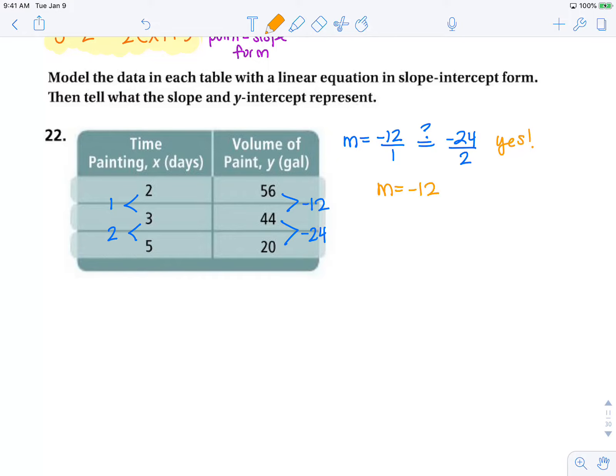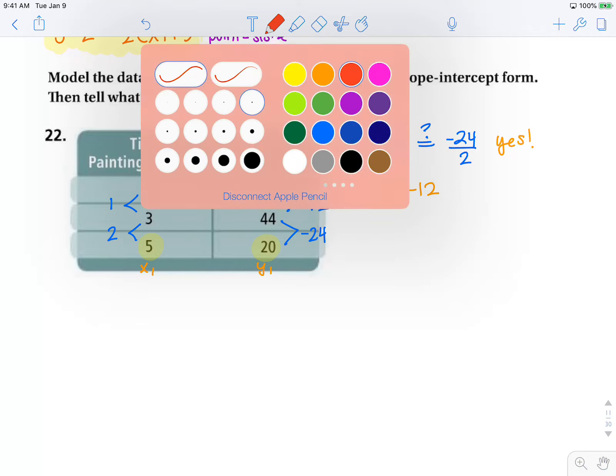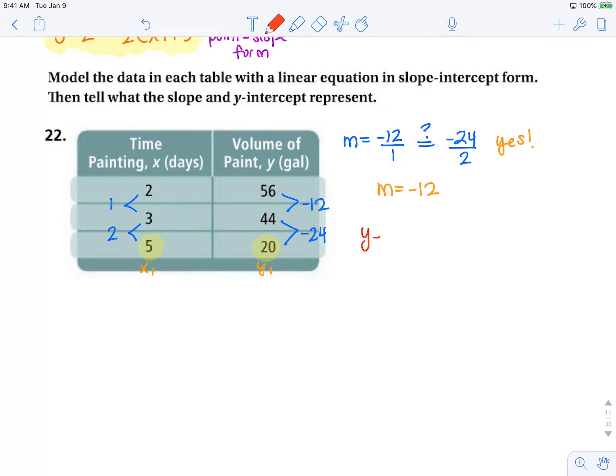Now remember, we can use point-slope form using any point on this table. So I'm going to use this point, 5 and 20, because that's going to be a nice, easy point to play around with. So this is going to be my x1 and my y1. So point-slope form y minus y1 equals m times x minus x1. That's going to be y minus 20 equals negative 12x minus 5.